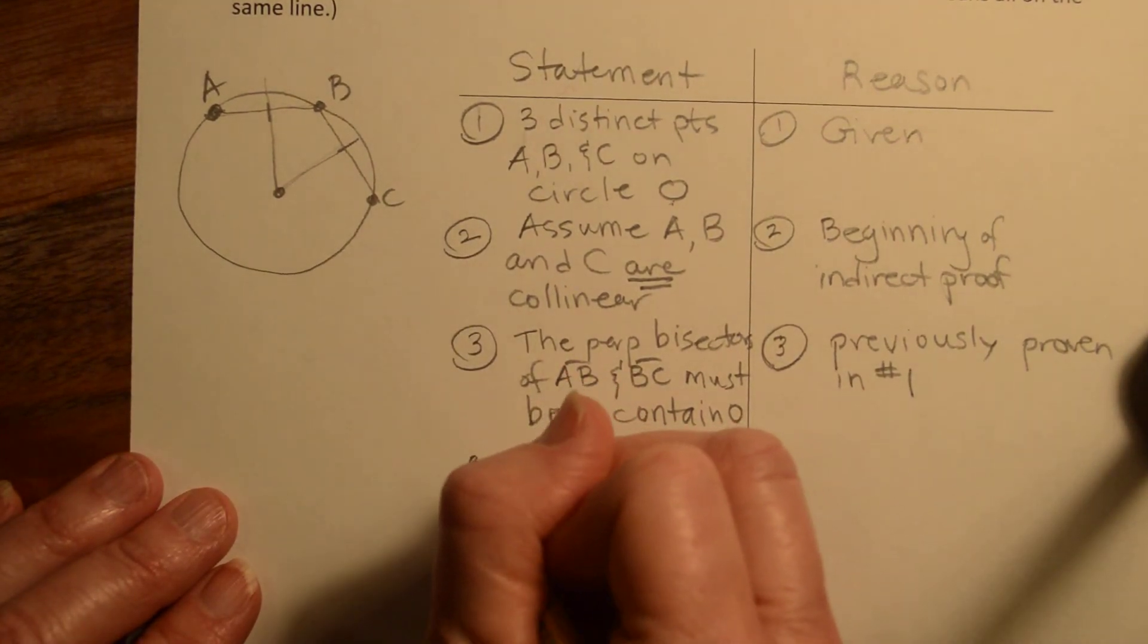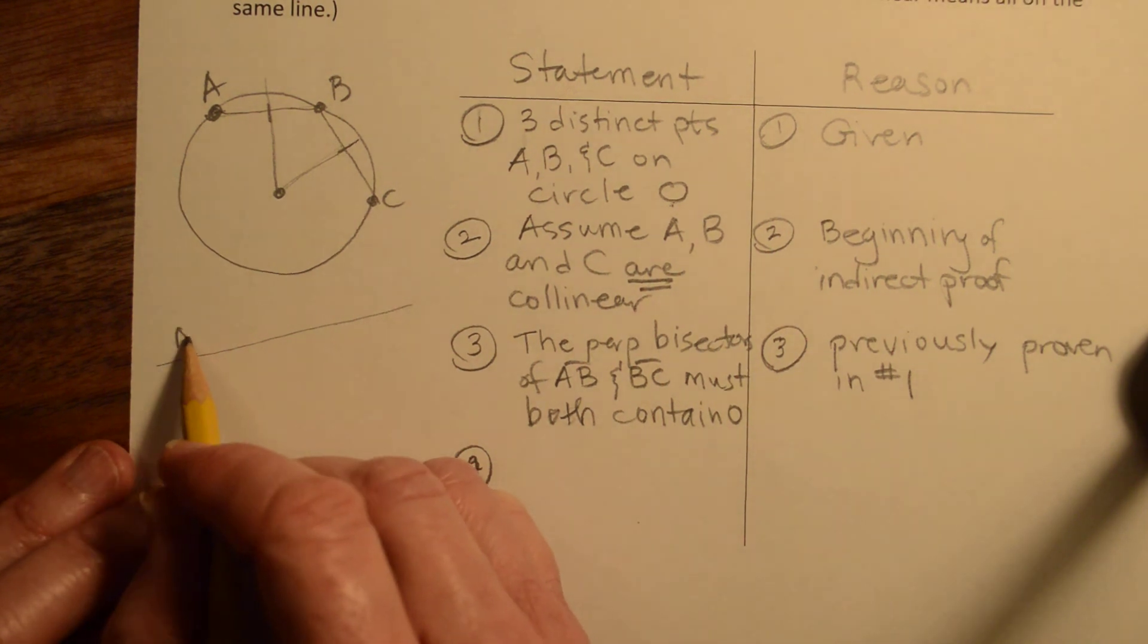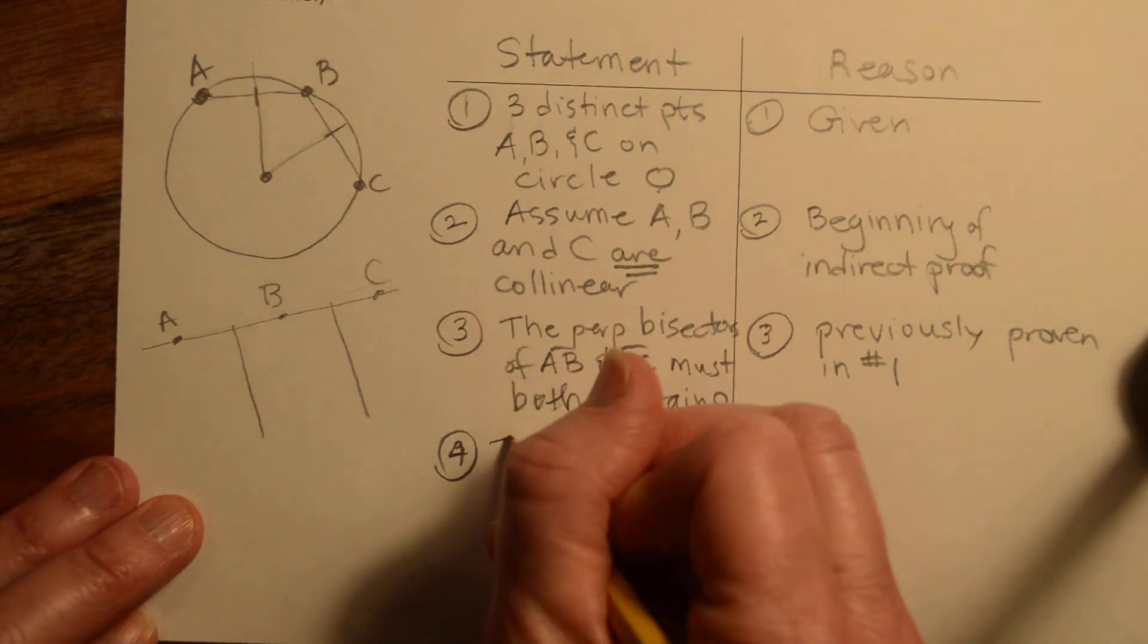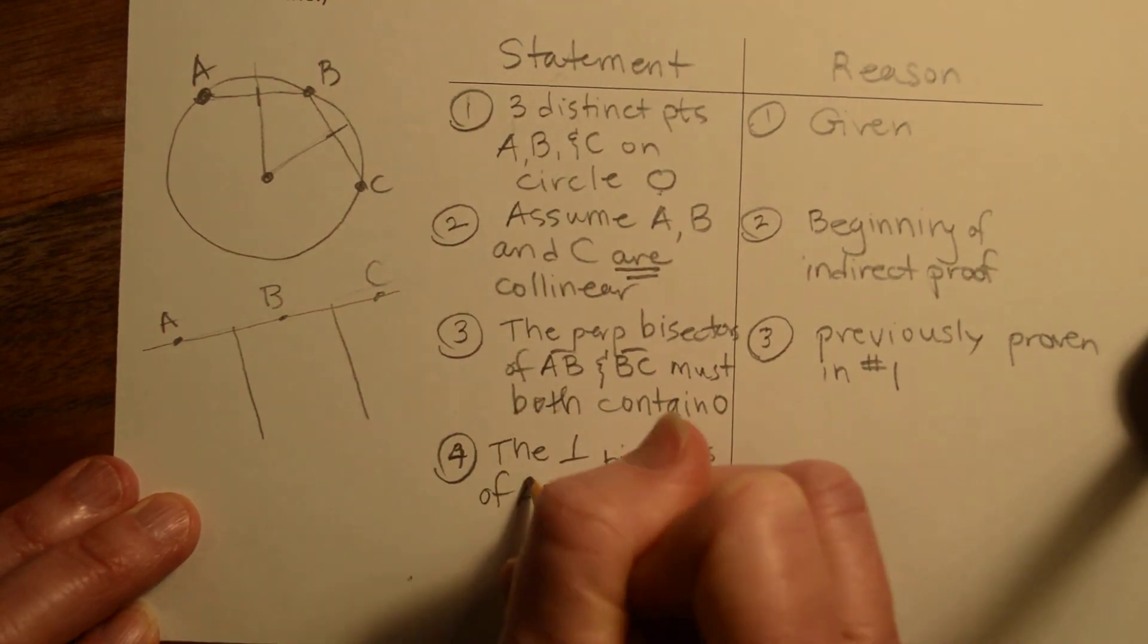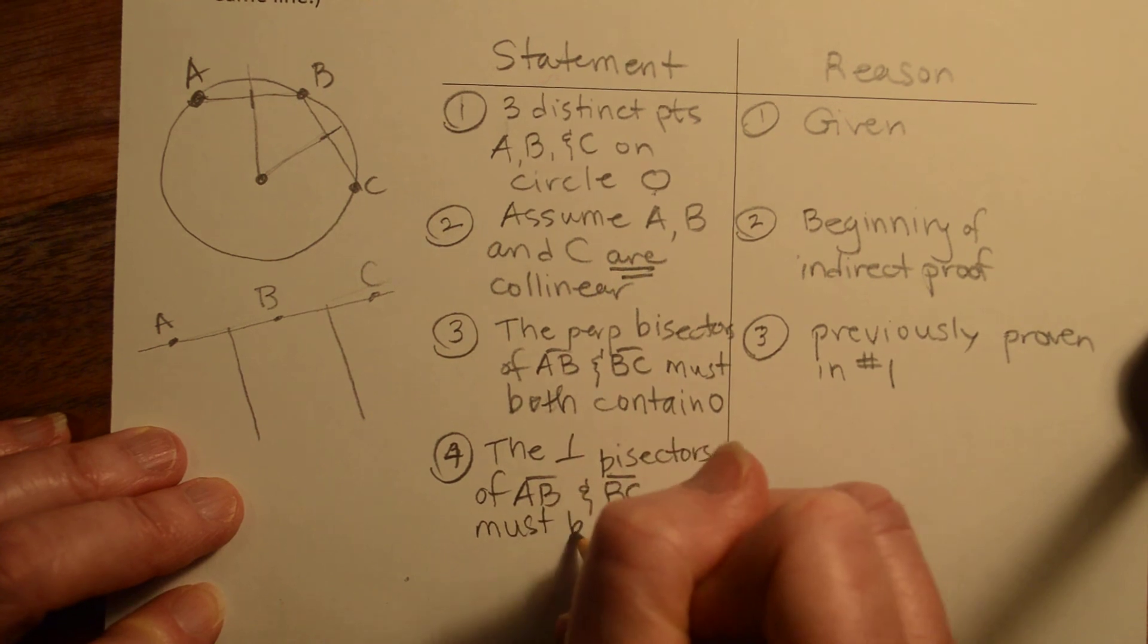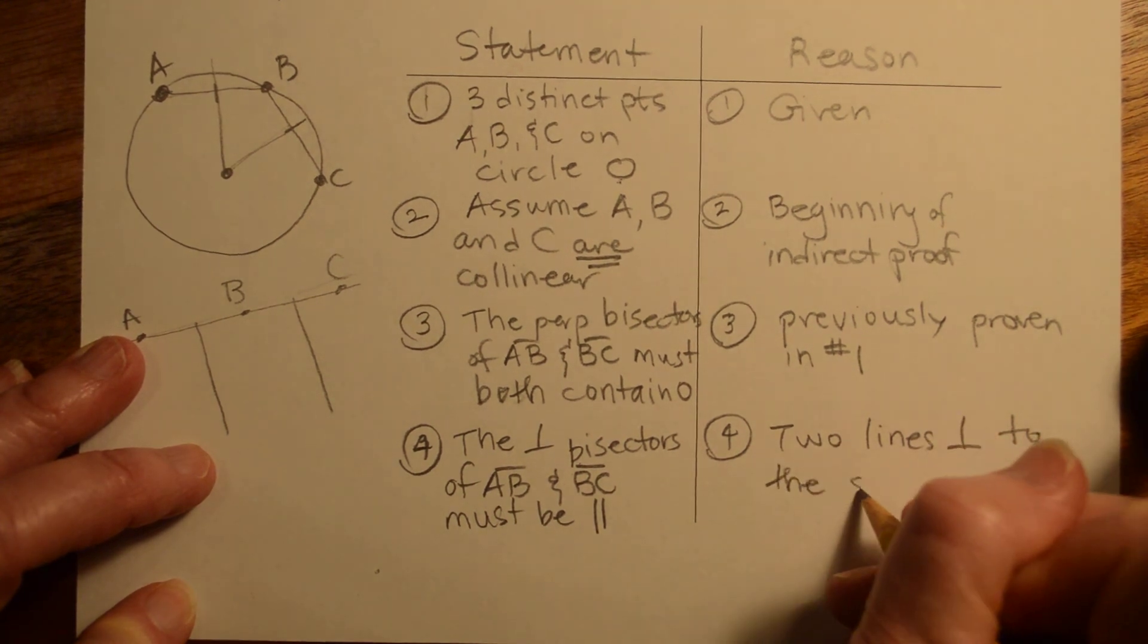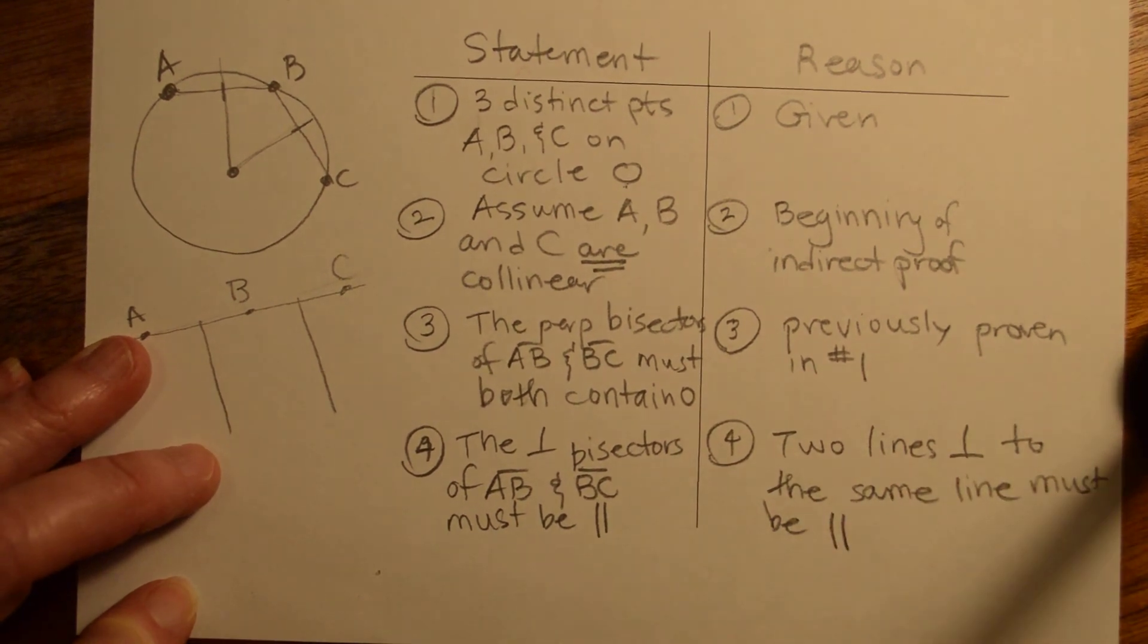All right, but we also know, because we're assuming that these are on the same line, that they're collinear, again, this is just mind bending to me, because we're assuming that they're collinear, so we've got A, B, and C right here, that their perpendicular bisectors, if they're collinear, are perpendicular to the same line. All right, so the perpendicular bisectors of A, B, and B, C must also be parallel. And the reason for that is because two lines that are perpendicular to the same line must be parallel.